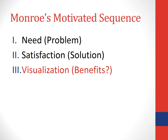The third and final main point in Monroe's Motivated Sequence is visualization. In this step, the speaker's job is to help the audience visualize the benefits of your solution and how it will directly affect them. You can use positive visualization — presenting benefits to make your audience feel happy and motivated — or negative visualization, helping the audience understand what might happen if we don't adopt the solution. Sometimes it's helpful to combine both. For more information, see page 377 of your textbook.